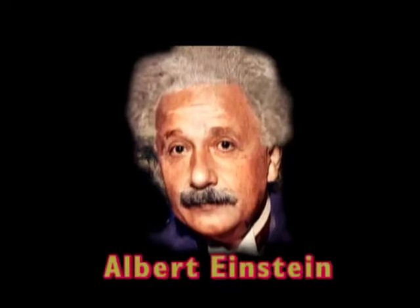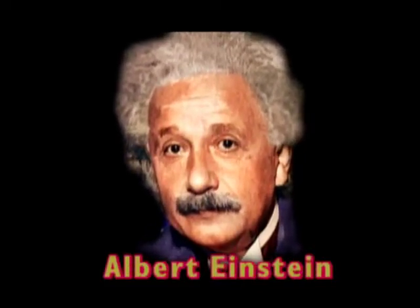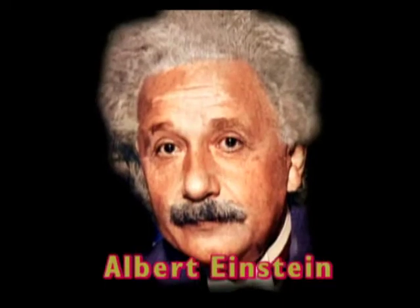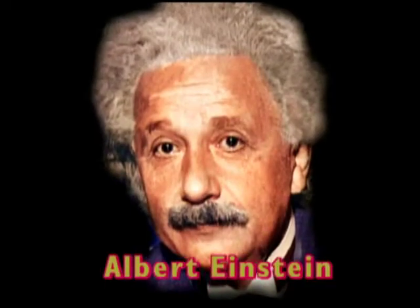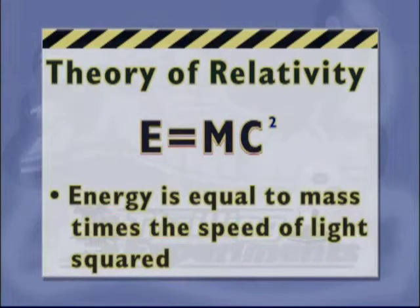One of the first scientists to work with energy was Albert Einstein. In his studies, he came up with a formula. You may have heard of the theory of relativity — E equals MC squared.